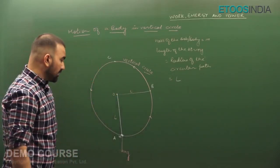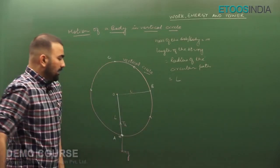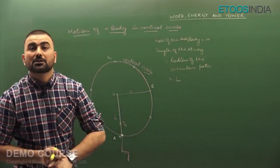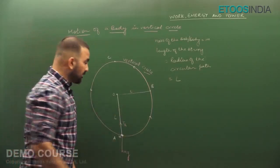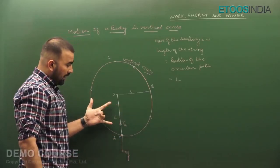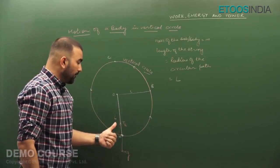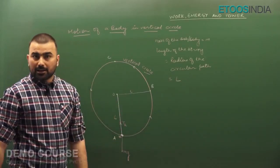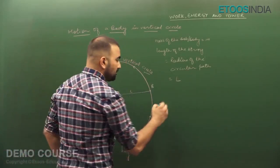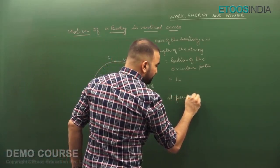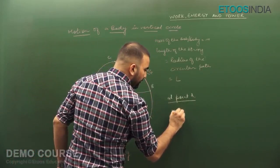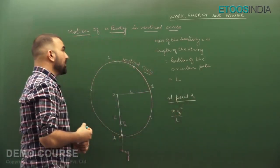Mg will act downwards. Tension at point A takes the body upward or in a circular path — that is called the centripetal force. So T_A, which provides the centripetal force, equals Mv²/R. At point A, T_A's magnitude is greater than Mg, so the net force equation is: Mv_A²/L = T_A minus Mg. This is equation number one.